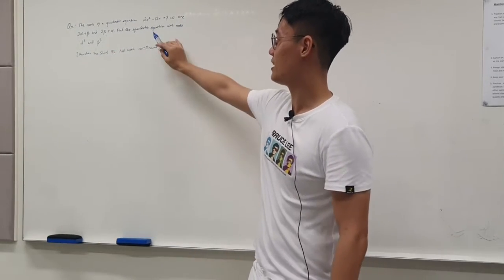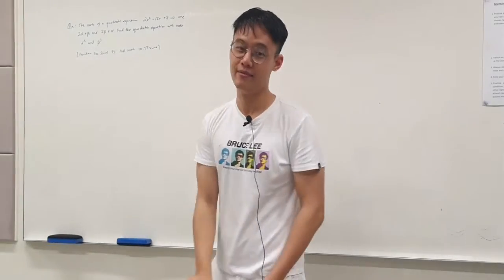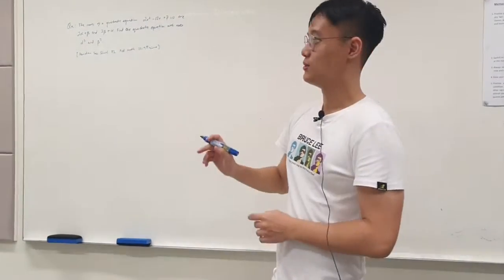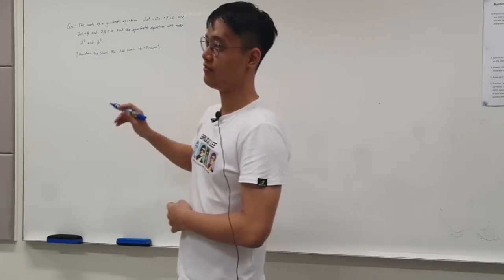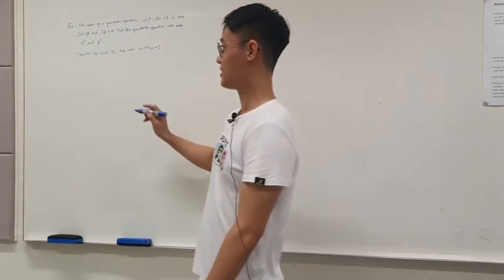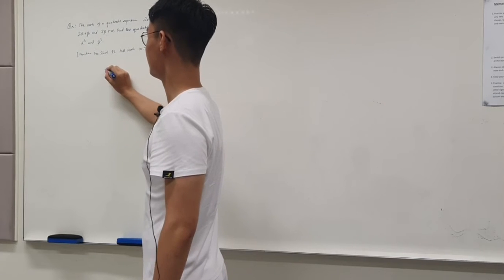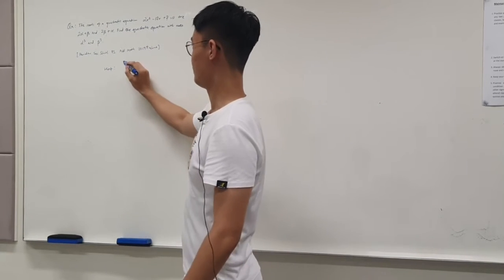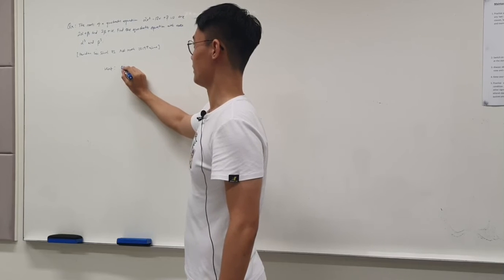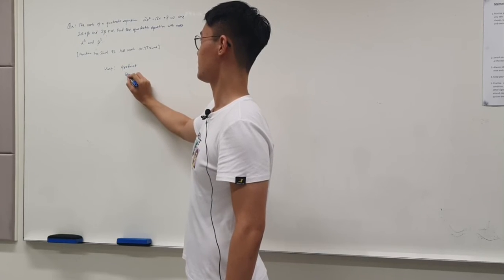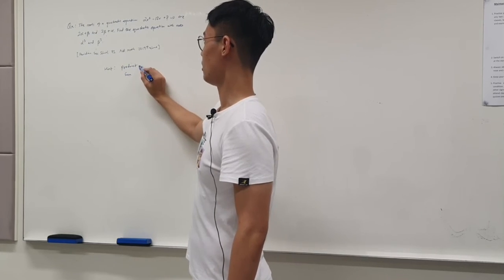Find the quadratic equation with roots α³ and β³. We'll give you a few minutes to do this question, and I'll be providing some hints. The hint is: what is the product and what is the sum of roots?